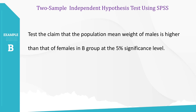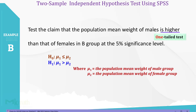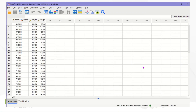Here is another example. Again, we see the keyword 'higher' in the question text, and this indicates a right-tailed test, which is a one-tailed test. The null and alternative hypothesis statements should be like this. Again, please identify each mean. Then, let's perform two independent sample tests using SPSS once again. Similar to the previous example, we use the weight B variable along with the gender variable this time.